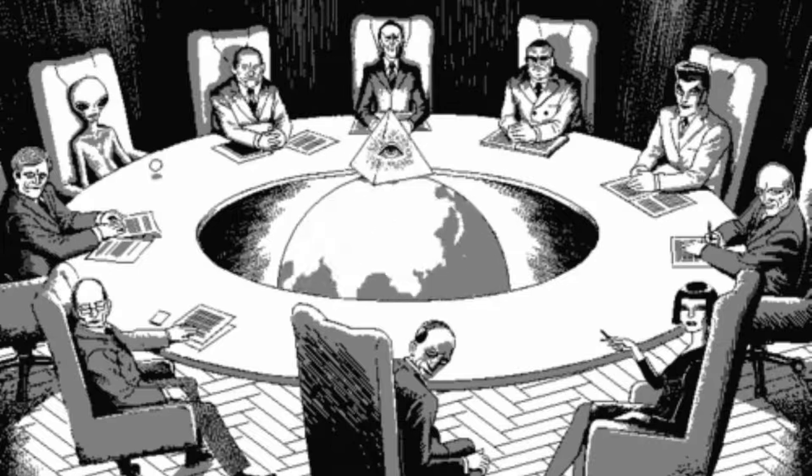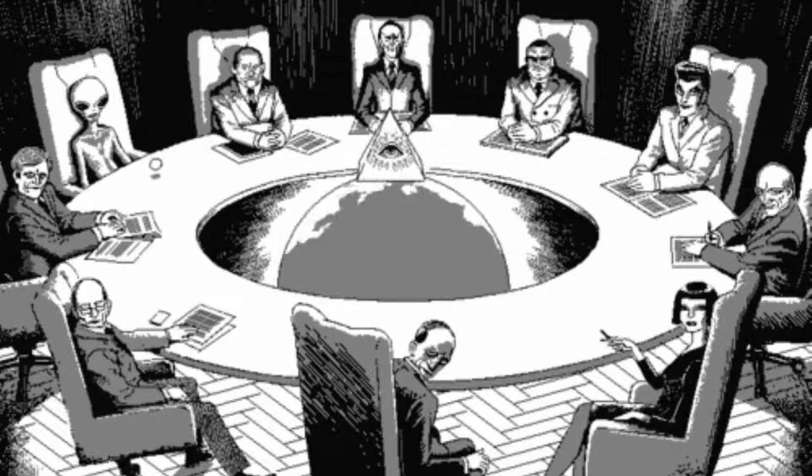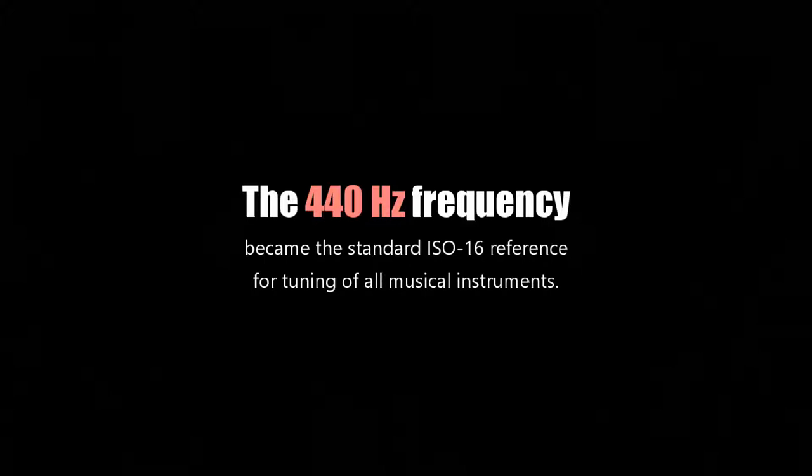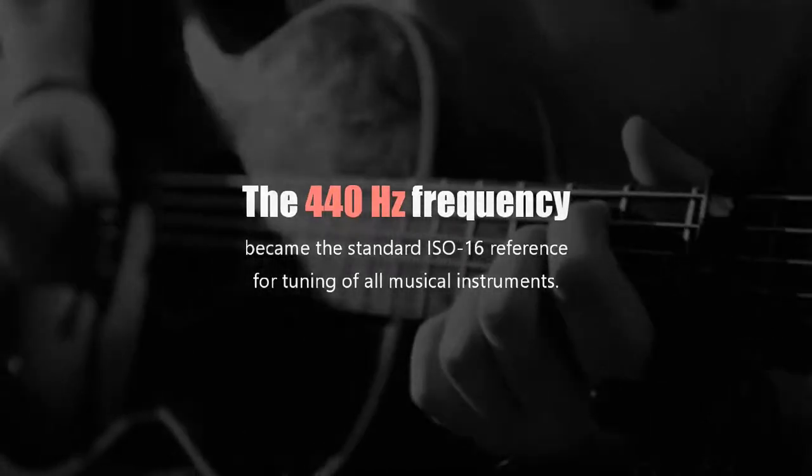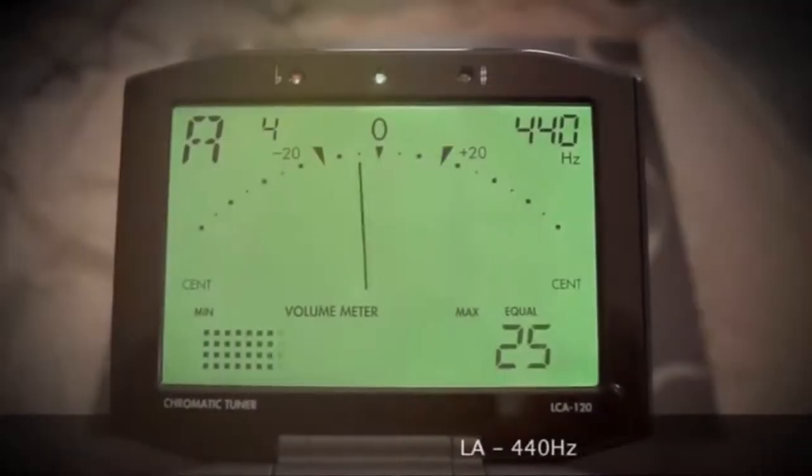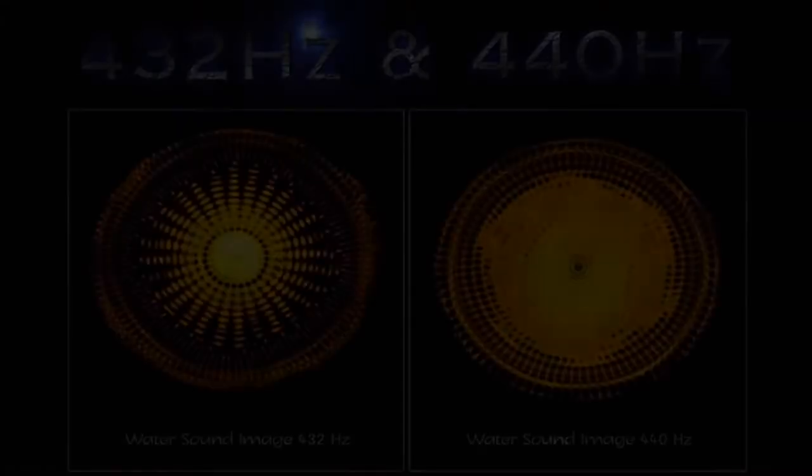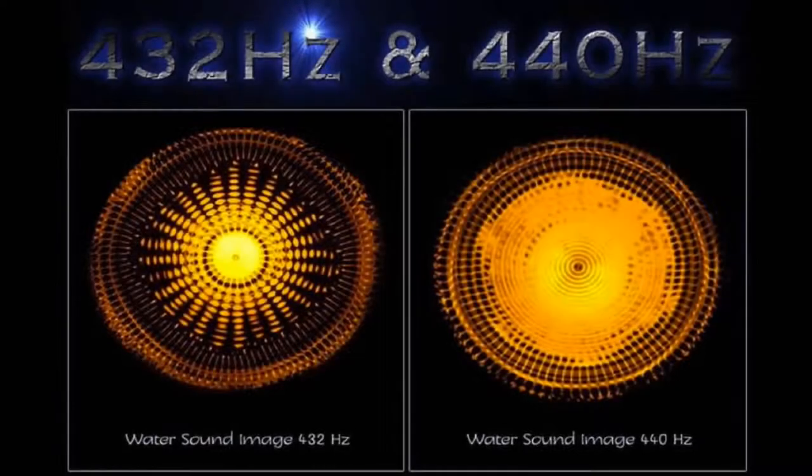Then in 1953, a worldwide agreement was signed between all nations. This frequency became the standard ISO 16 reference for tuning of all musical instruments. This tone standard is now accepted all over the world. There remains a mystery why this frequency was chosen in the first place. In fact, there are many people who disagree with this standard.